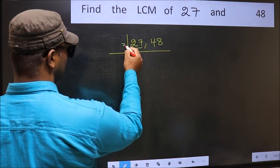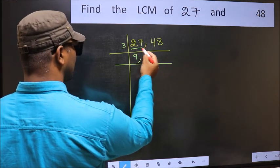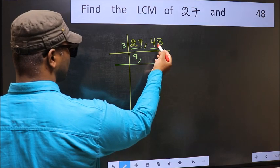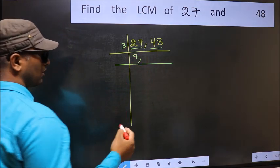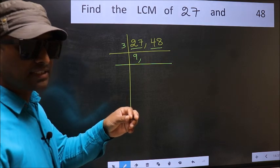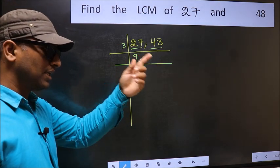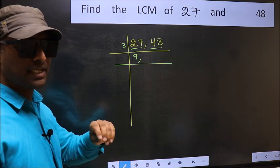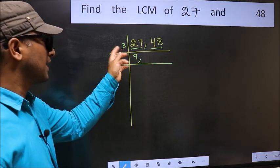27 is 3 nines 27. The other number is 48. To check whether 48 is divisible by 3 or not, add the digits: 4 plus 8, we get 12, and 12 is divisible by 3. So this number is also divisible by 3.